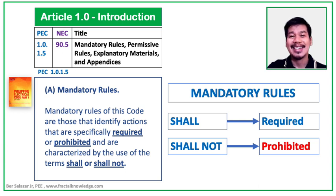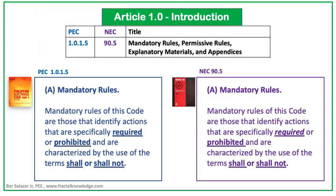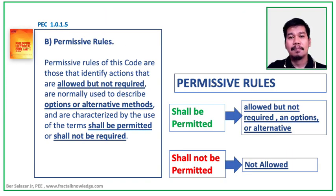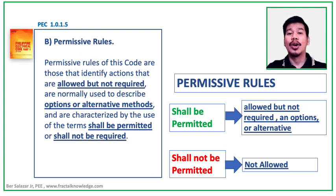This is for safety reasons because failure to do so may result in loss of life and property. Moving on to PEC Section 1.0-1.5a, Mandatory Rules. Mandatory Rules of this Code are those that identify actions that are specifically required or prohibited and are characterized by the use of the term 'shall' or 'shall not.' We have similar content with NEC Section 90.5, Paragraph A. On the other hand, Philippine Electrical Code Section 1.0-1.5, Paragraph B, Permissive Rules state that it can be identified by actions that are allowed but not required, are normally used to describe options or alternative methods, and are characterized by the use of the terms 'shall be permitted' or 'shall not be permitted.'